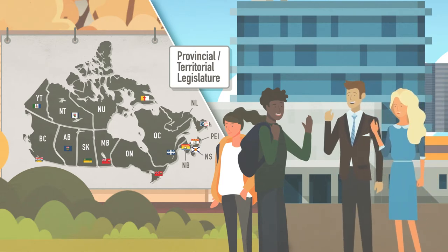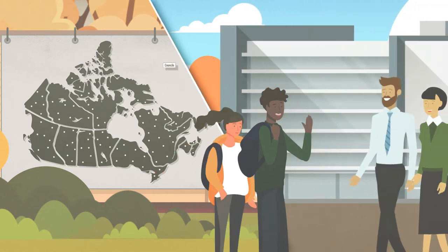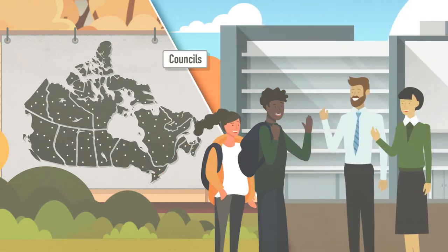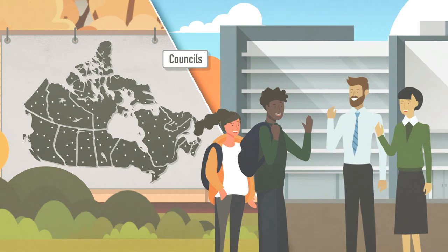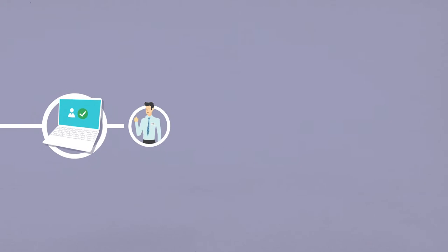Municipal elections are also run by agencies or municipalities across the country who help you elect your local representatives, such as mayors, councillors, and school board trustees. At all three levels, these agencies are responsible for running elections that are fair and equal for all, which is no small task.